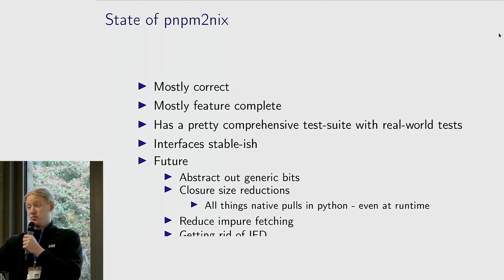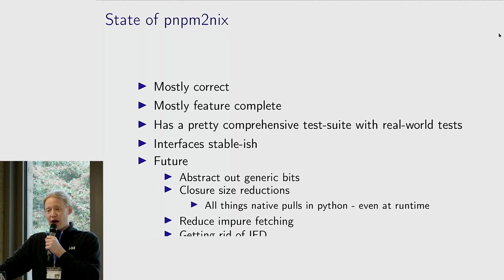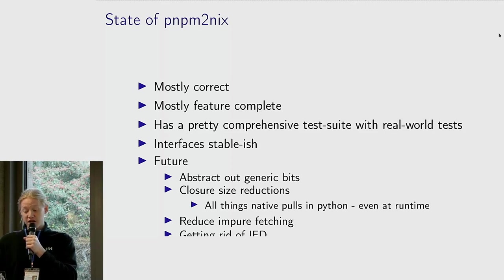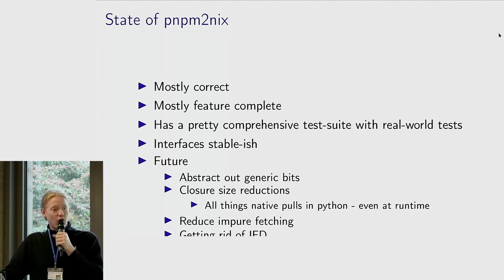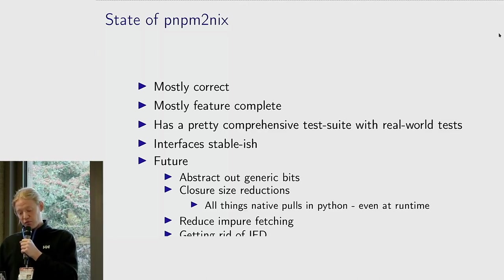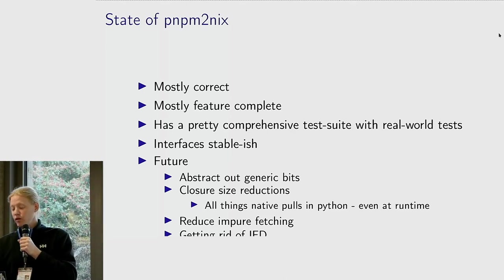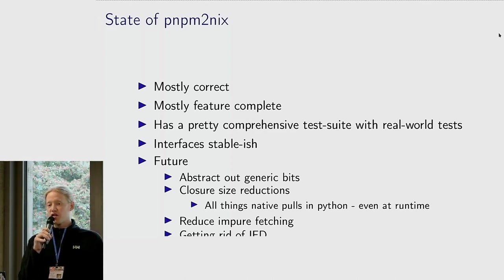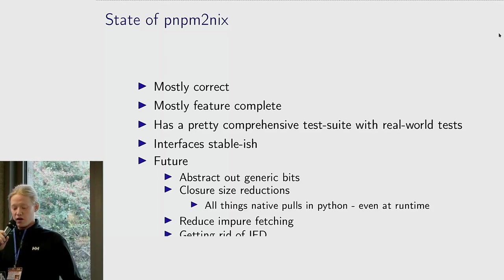The state of the tooling now is mostly correct — it does mostly the right thing. I have not found any new bugs in months, it's mostly feature complete, and supports almost every feature that PNPM supports. It has a pretty comprehensive test suite extracted from real-world applications. Interfaces like the override interface are mostly stable, but I do want to make a big change before I can say it's 1.0. In the future, I would like to abstract out some generic bits, like the work I had to do to resolve circular dependencies — walking the dependency graph, identifying cycles, and merging cycles into a single Nix package, so from Nix's point of view no recursion is going on at all.